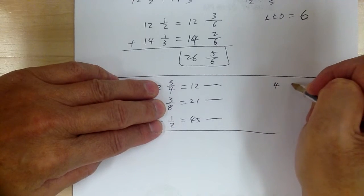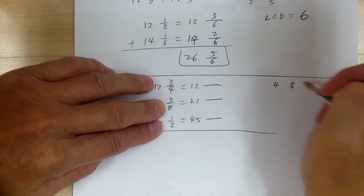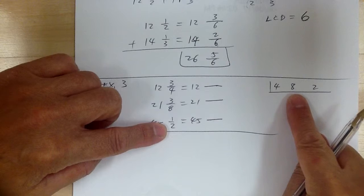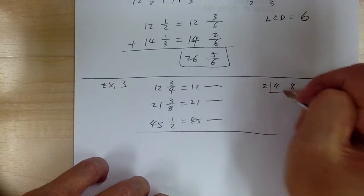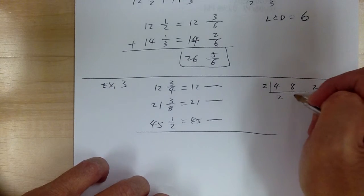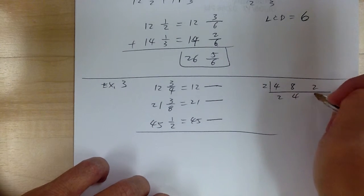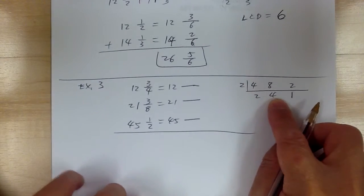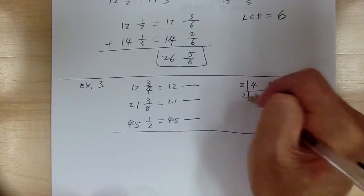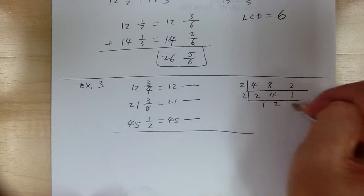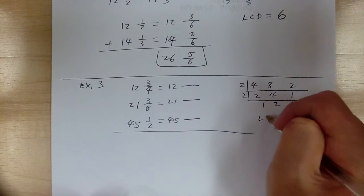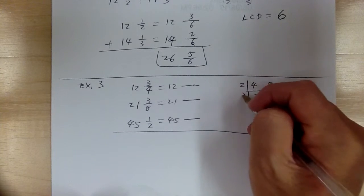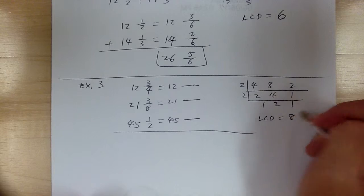You've got denominators 4, 8, and 2. You can see it's going to be 8, but if you don't see that, divide by 2 — you get 2, 4, and 1. As long as two numbers can divide, you can go and divide. Divide by 2 again and you get 1, 2, 1. So your LCD is 2 times 2 times 1 times 2 times 1, which gives you 8.